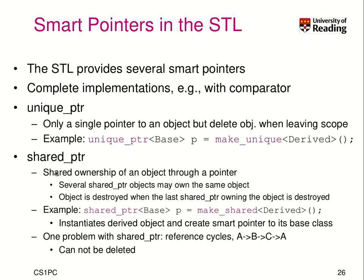There is also a shared_ptr — this is essentially what we implemented. Several shared pointer objects may own the same object, and the object is destroyed when the last shared pointer owning it is destroyed — it uses reference counting as we did. In this example, we instantiate a derived object and create a shared pointer to its base class: make_shared<Student> assigned to a shared_ptr<Person>. A problem with shared pointers and reference counting is reference cycles — if object A references B, B references C, and C references A, and you lose the last external pointer, all of them still have a reference count of 1 and cannot be properly deleted.